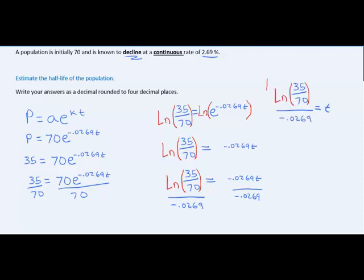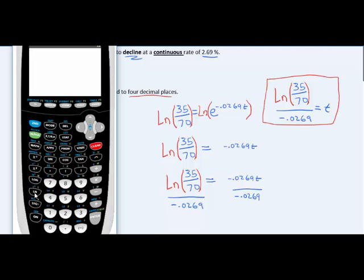Now I need only to type this result into a calculator to get a four decimal place answer. So I'm going to take the natural log of 35 over 70 and then divide by -0.0269.